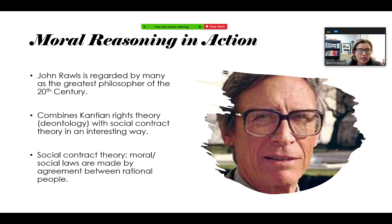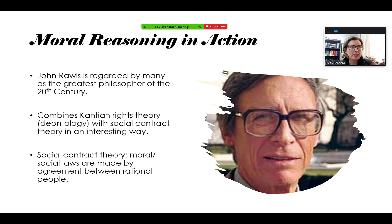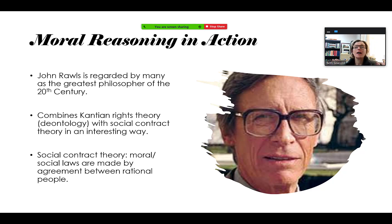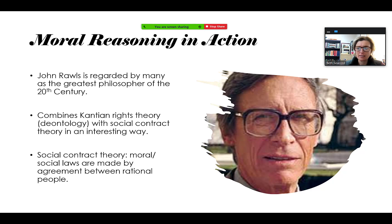Let's define social contract theory. Moral or social laws that are made by an agreement between rational people. This is a reasoning approach to see if our laws, our policies, our building plans, our plans to put a toxic waste dump in a certain neighborhood, are actually fair or just. So Rawls sets out a moral reasoning plan.